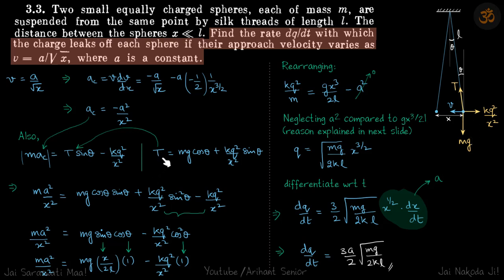We put the value of t from here and value of acceleration as minus a square by x square. We are putting mod so we can neglect the negative sign. We take minus kq square by x square, this becomes 1 minus sin square theta which is cos square theta.